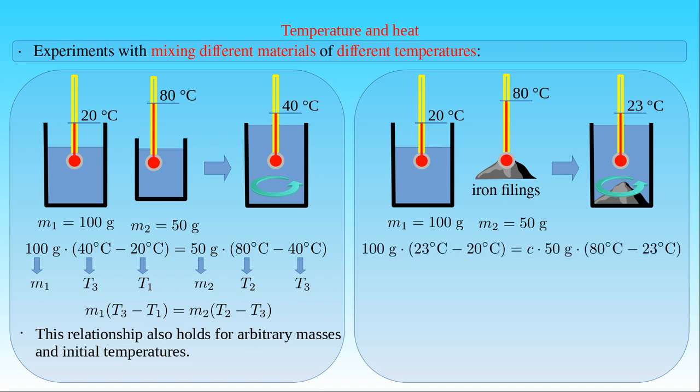100 grams times (23 minus 20) degrees Celsius is proportional to 50 grams times (80 minus 23) degrees Celsius, where the proportionality constant C depends on the physical properties of the water and the iron filings. We will see that the temperature in the container is 23 degrees Celsius after mixing. In this case, the value of C is 0.1.